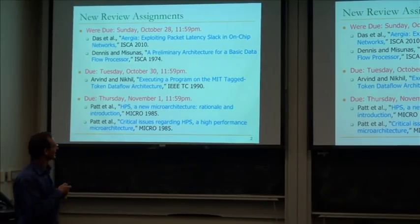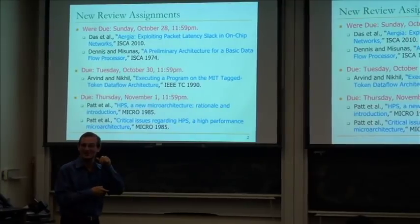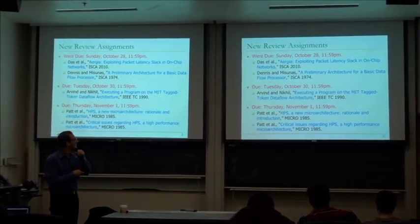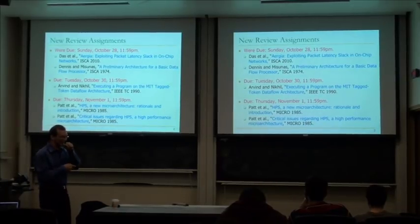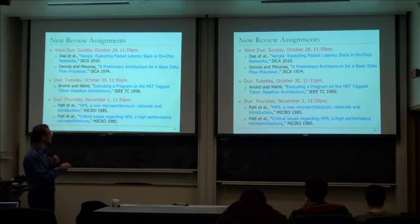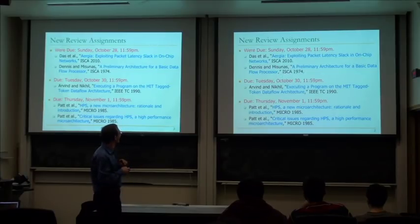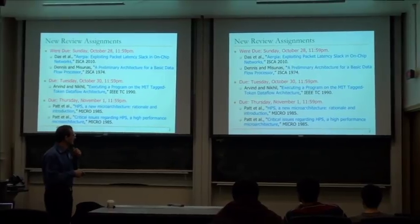The professor discussed upcoming readings. Students had reviewed papers on data flow, including the Dennis and Misuna paper, which some found hard to understand. Some terminology in that paper is old, but it's a seminal paper establishing the data flow paradigm for executing programs. The next readings are on restricted data flow micro-architecture — the original out-of-order execution papers — covering how to do micro data flow under a control-flow ISA. These are short papers from around 1985 and are due Thursday.